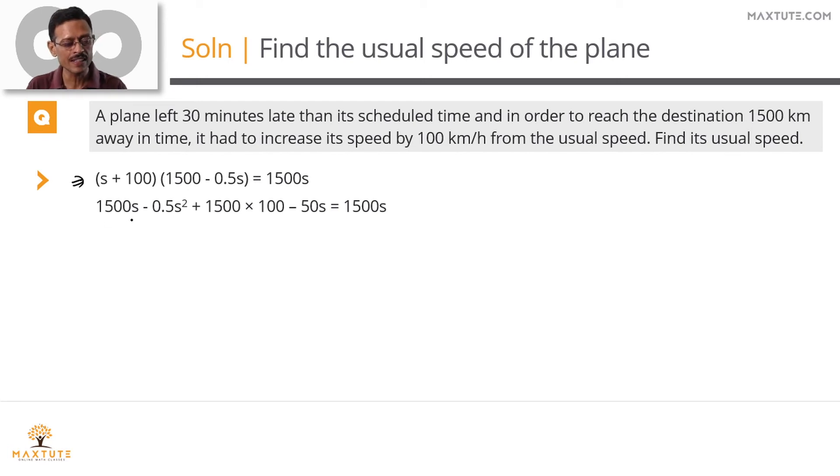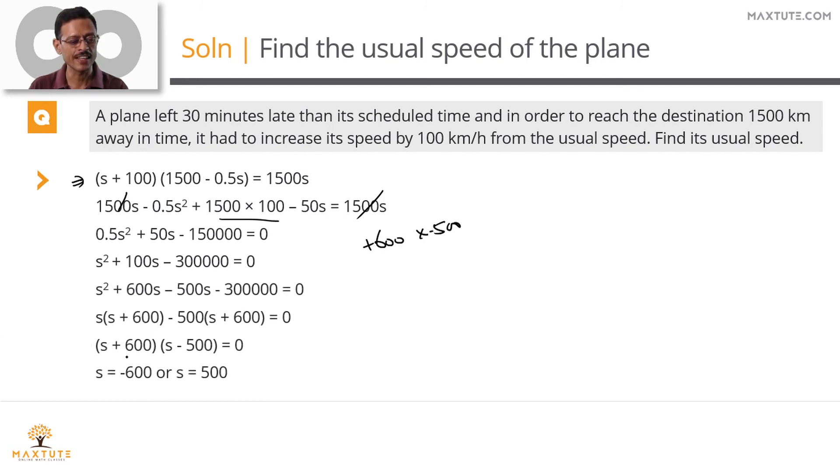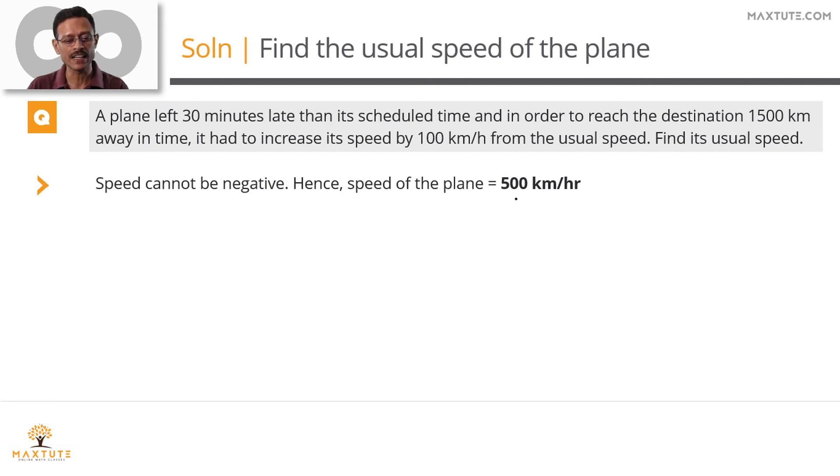So it leaves us with 1500 s minus 0.5 s square plus 150,000 which is 1500 into 100 minus 50 s equals 1500 s. Cancel these two. Divide the entire expression by 0.5 to get a quadratic equation s square plus 100 s minus 300,000. Product is minus 300,000, sum is plus 100. You can factorize it as 600 into 500. So it's a plus 600 and a minus 500. So the expression factorizes as s plus 600 into s minus 500 equals 0. So s is either minus 600 or s equals 500. s is the usual speed of the plane. Speeds cannot be negative. So the usual speed of the plane equals 500 kilometers per hour.